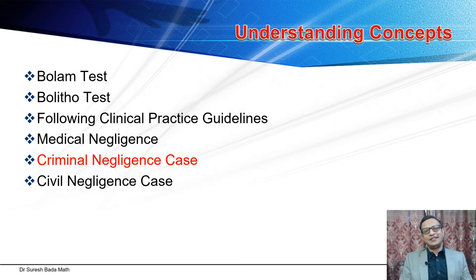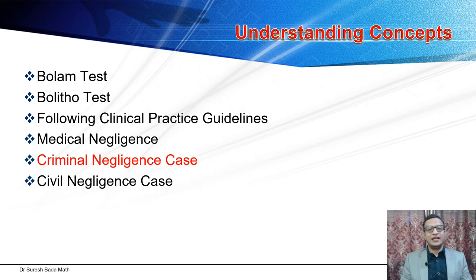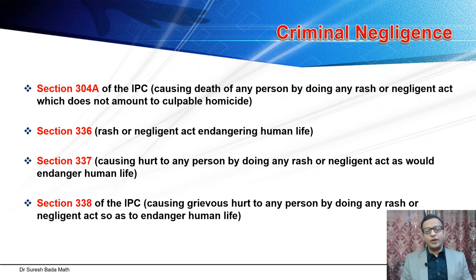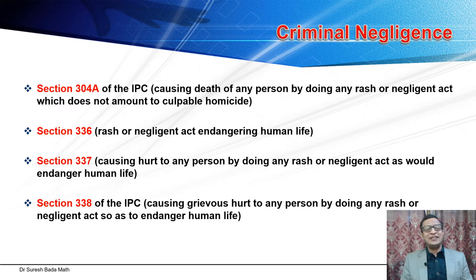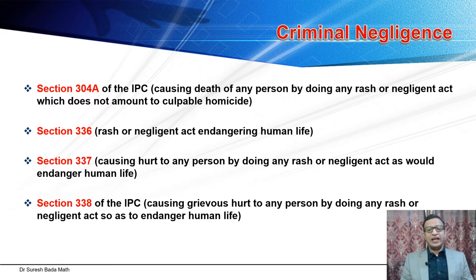Now coming to criminal negligence. Depending upon the type of negligence, if it is very severe, it is criminal negligence. If it is within a reasonable degree of care, then it is a civil case. Under the Indian Penal Code, there are four important sections. Section 304A covers causing death of a person by doing any rash or negligent act which does not amount to culpable homicide — for example, a doctor doing surgery and the patient dies. Sections 337 and 338 cover rash or negligent acts endangering human life — 337 for grievous injury and 338 for simple injury.